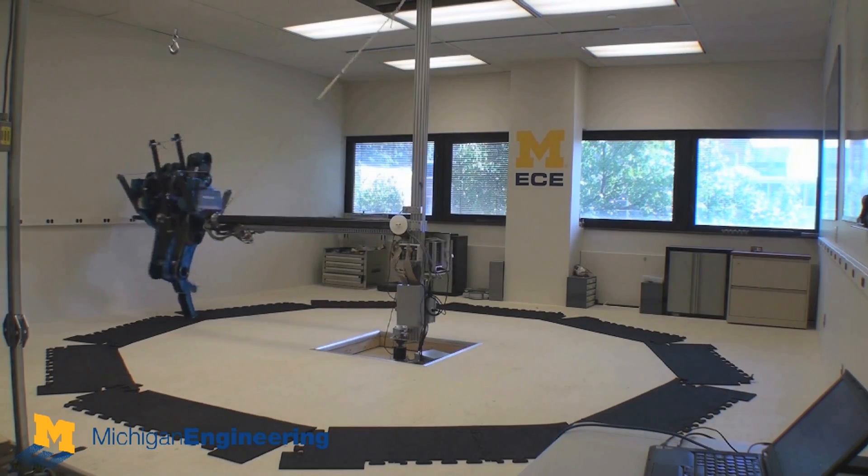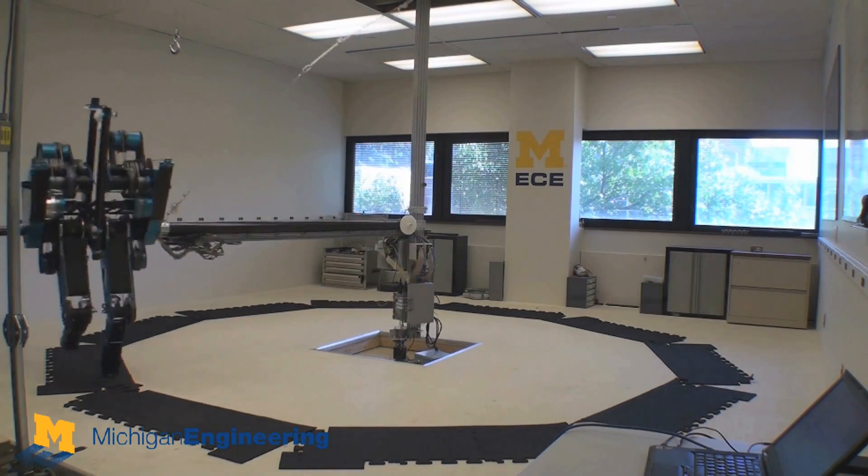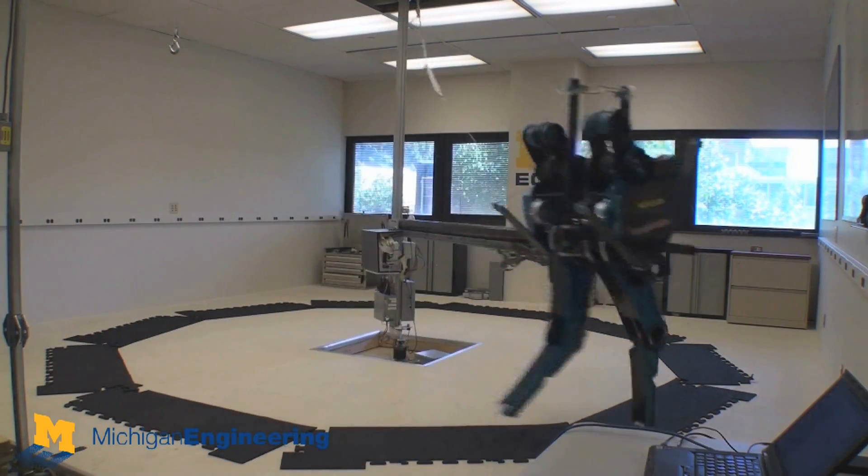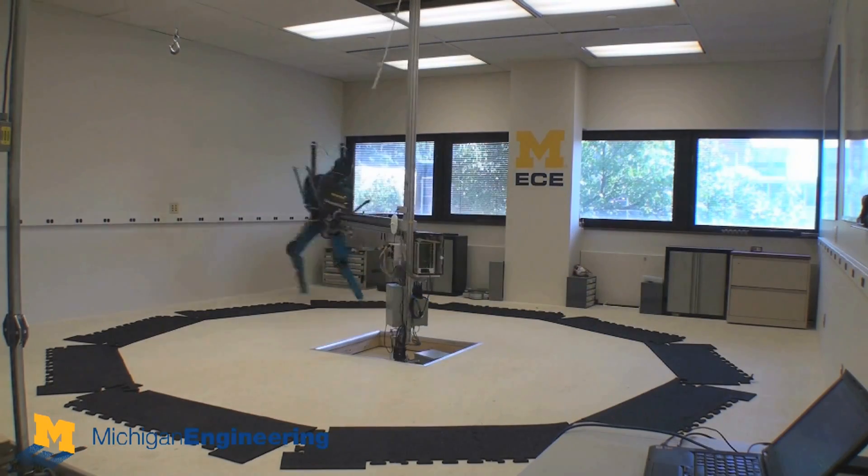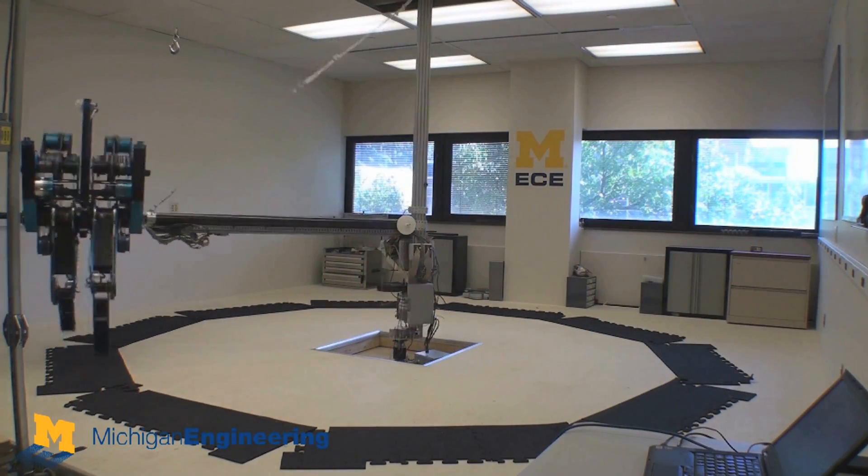Thumper was also built into a bipedal version, so just two of these legs exactly the same put together. And that robot is named Mabel, and is at the University of Michigan.